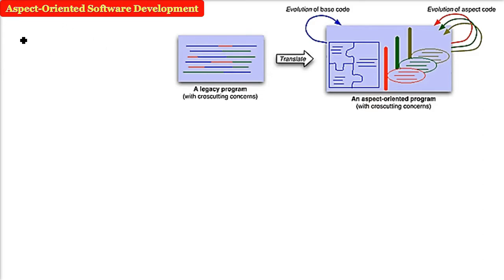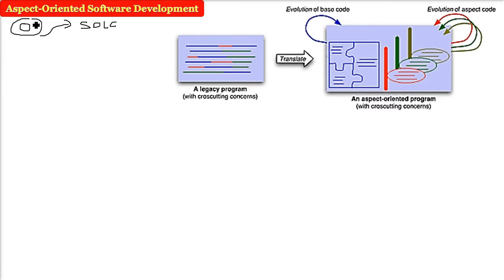Aspect oriented software development is a software development life cycle approach that is specialized — it will be used in certain specialized software only. You might have heard about object oriented software development, where everything is based on objects — you make a class, make an object, and everything is accessed through the object. In the same way, here we are talking about aspects, dimensions, and phases of software development.